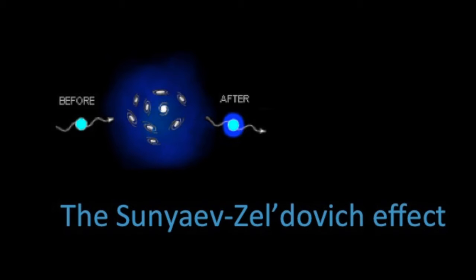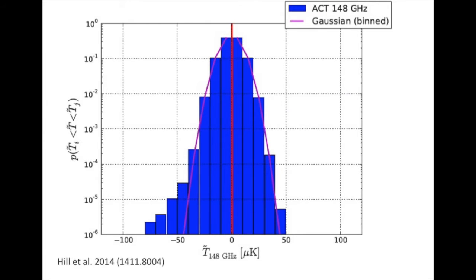People have used this effect to find clusters and count galaxy clusters, which lets you constrain cosmology. In this approach, instead of finding individual clusters, we statistically account for the cumulative effect of all the clusters in the map, just at the map level.